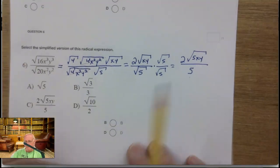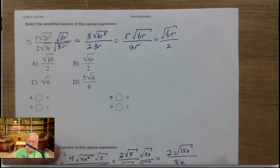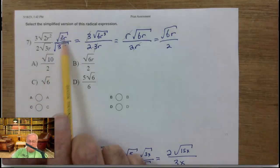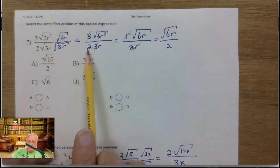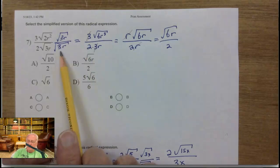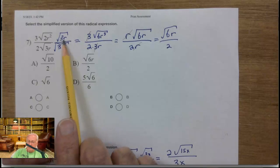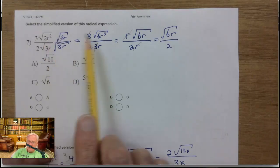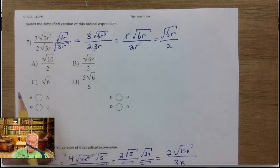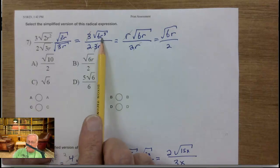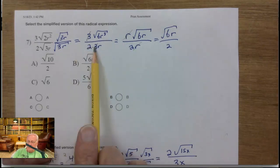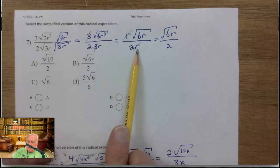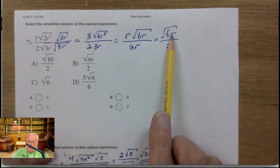Number seven. There's a square root of 3r on the bottom, so multiply the top and the bottom by the square root of 3r — the square root of 3r cannot be on the bottom. So the bottom just has 2 times 3r now. And 3r on top times 2r² is 6r³. I can take an r out of there because there are three of them — take the 1r out. The 3s cancel out, and the r's cancel out. So all that's left is the square root of 6r over 2.